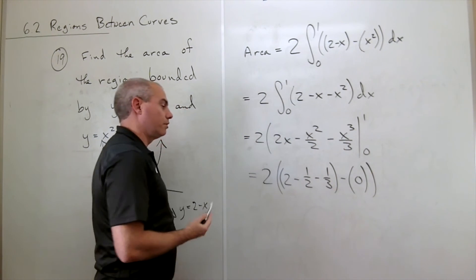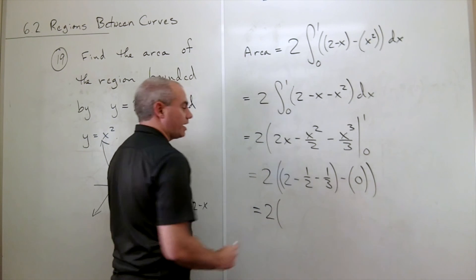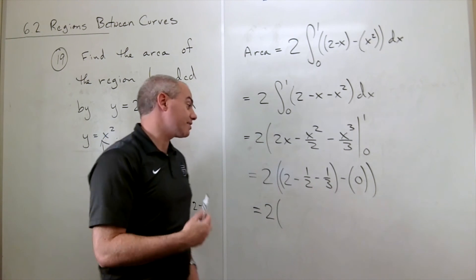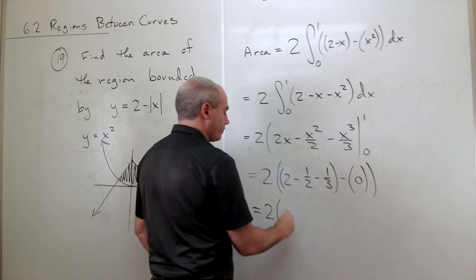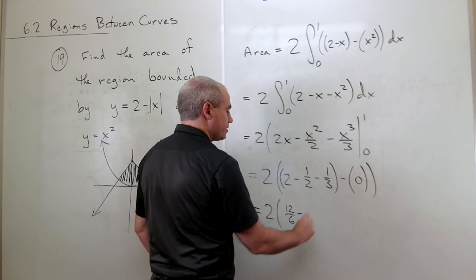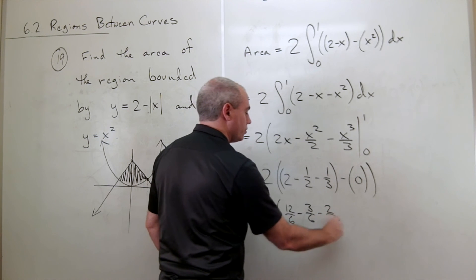And so we're almost done here. I still have the 2 on the outside. On the inside, I could get a common denominator of sixths. So we've got how many sixths here? This is 12 over 6 minus 3 over 6 minus 2 over 6.